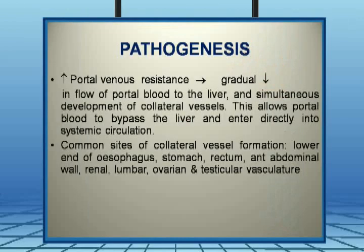Increased portal venous resistance leads to a gradual decrease in portal blood flow to the liver. To maintain liver function, collaterals form, allowing portal blood to bypass the liver and enter the systemic circulation directly. Anatomical sites of collateral formation include the lower esophagus, stomach, rectum, anterior abdominal wall, renal, lumbar, ovarian, and testicular vasculature.